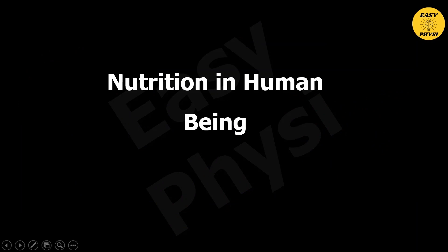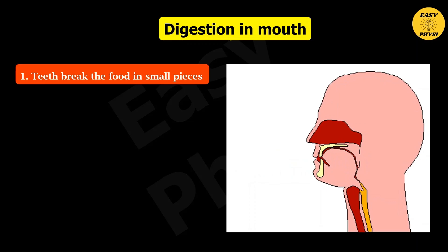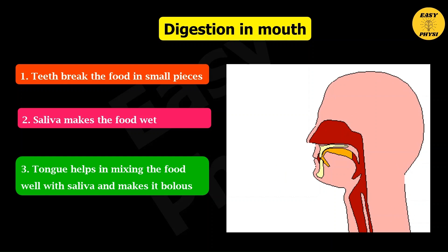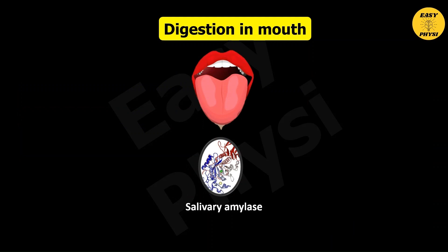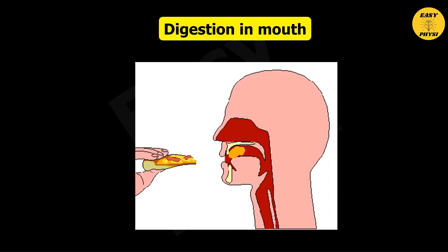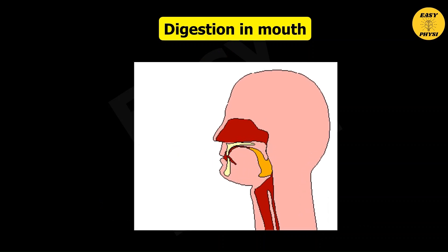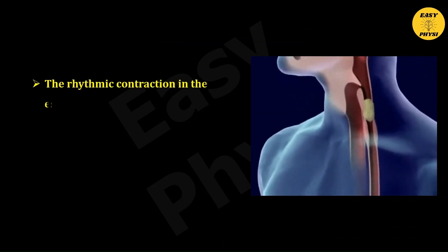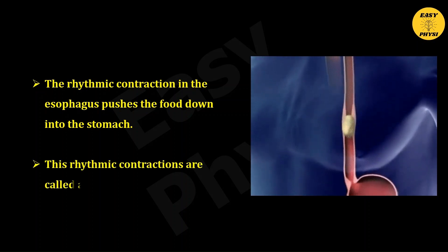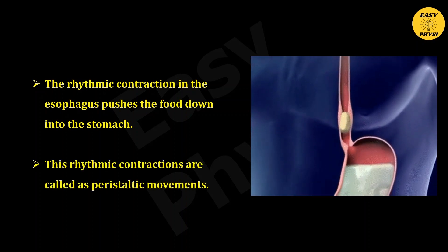Nutrition in human beings — Digestion in the mouth: The food inside the mouth is made into a paste by the action of teeth and saliva. Saliva is the fluid that makes the food soft and wet. Saliva has an enzyme called salivary amylase, which digests starch partially and converts it into simple sugars. The food is well chewed in the mouth and passes down into the stomach through the esophagus. These rhythmic contractions in the esophagus, called peristaltic movements, push the food down into the stomach.